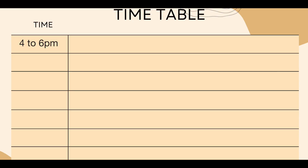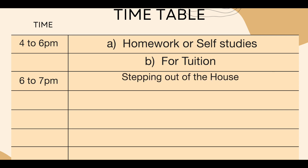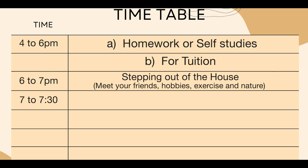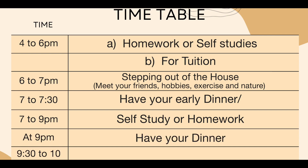From 4 to 6, you can use the time in two ways: either do homework and self-study, or if you go for tuition, use this time for that. From 6 to 7pm is our time for stepping out of the house — you can meet your friends, pursue your hobby, exercise, or go for a nature walk. From 7 to 7:30, you can have your early dinner. If not, then 7 to 9pm is when we do our self-study or homework. At 9, you can have your dinner.